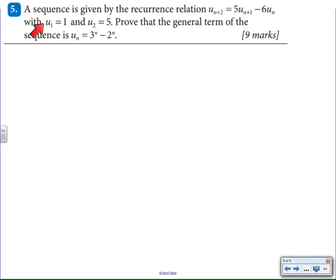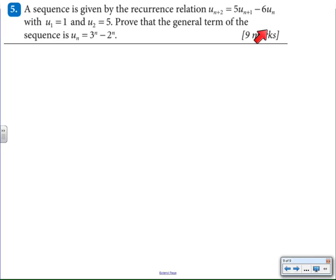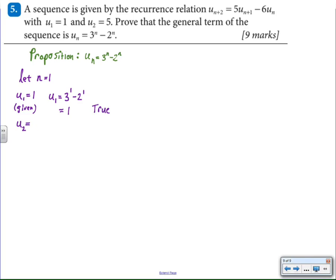Now this second sequence is a little bit different because the recursive definition requires that we use two previous terms to get the next value. So I need to know u sub one and u sub two in order to find the value of u sub three — it's like the Fibonacci numbers, you need to know the first two numbers to get the third. So in this particular proof we need to prove it true not just for n equals one, but for n equals one and n equals two, because we need two terms to be true in order to generate our sequence.